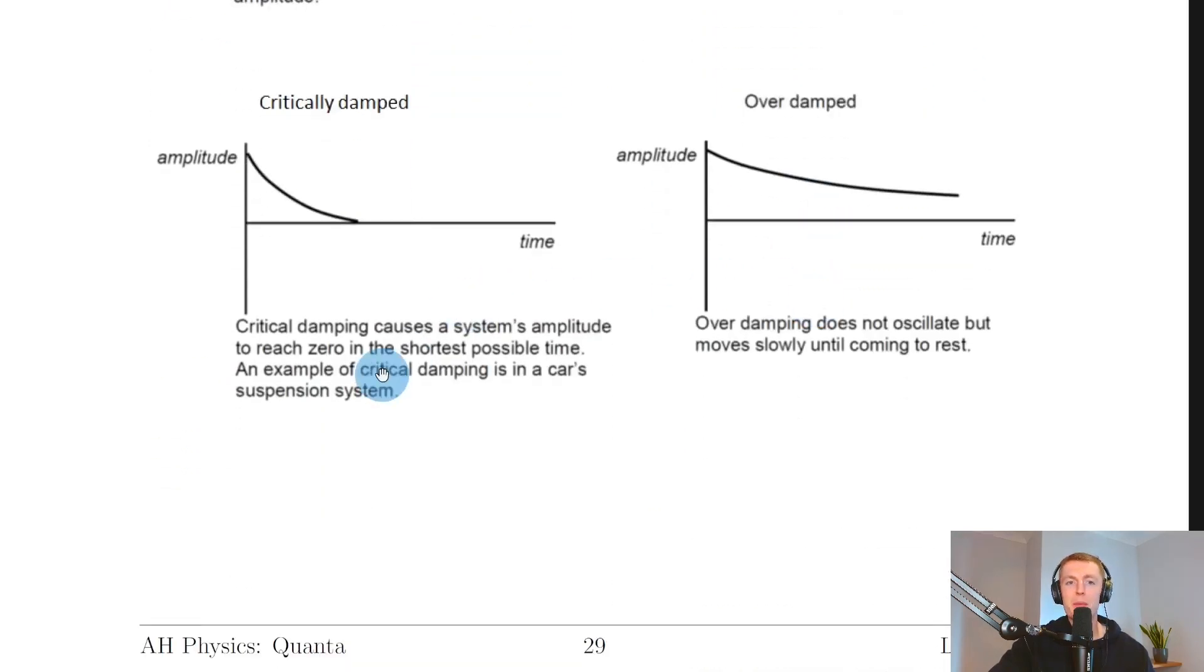A system being critically damped. So it says that critical damping causes a system's amplitude to reach zero in the shortest possible time. An example of critical damping is in a car's suspension system, and remember this is going to help your car or vehicle stop bouncing about if you go over a speed bump, for example. So you'll see we get no actual oscillations here, it's just the amplitude decreasing quickly over time to reach zero.